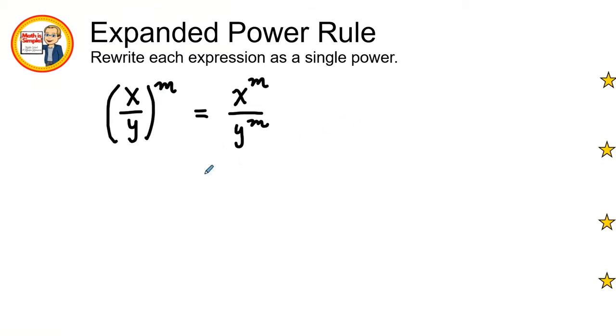So if I had a problem that was just the opposite, x to the m over y to the m, I could simplify it by just keeping my bases and then wrapping an entire parentheses around it over m.